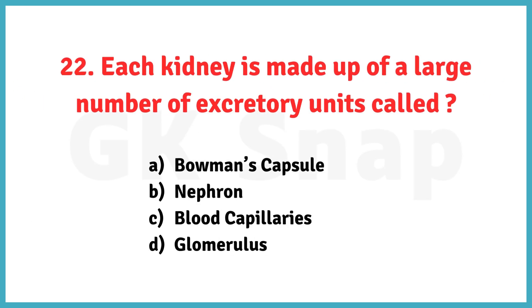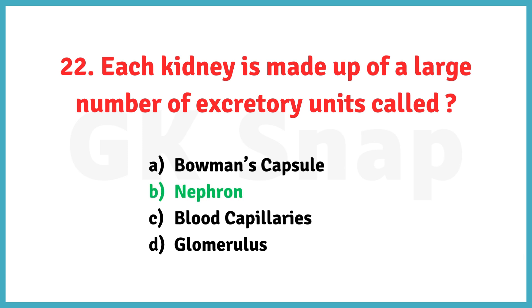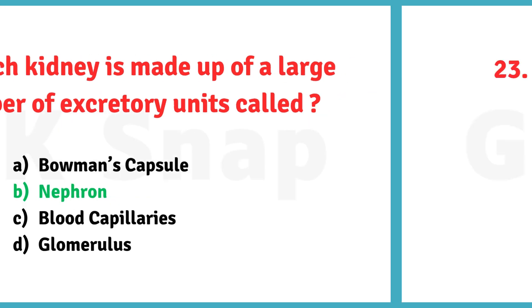Each kidney is made up of a large number of excretory units called? Correct answer is option B. Nephron.